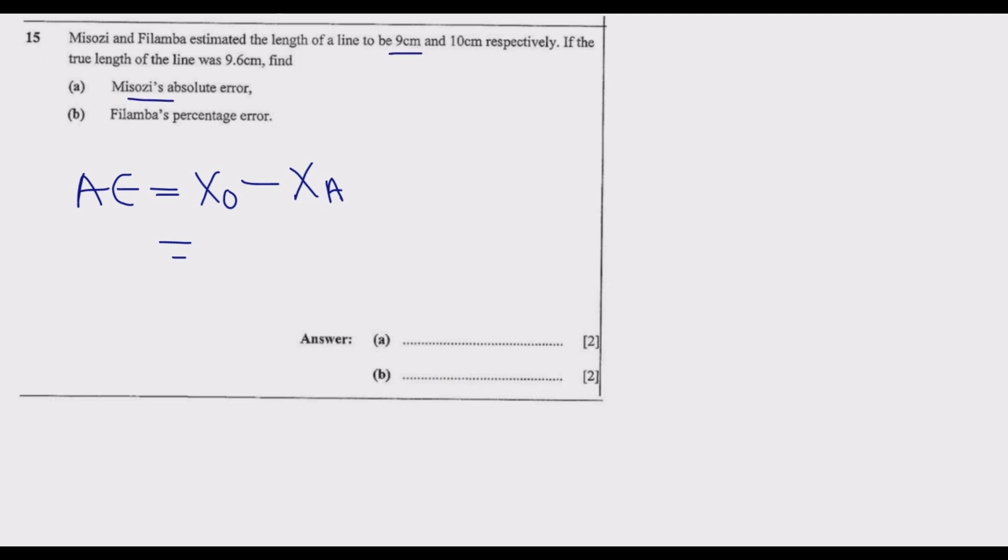So it's 9 centimeters minus the actual value which is 9.6. Nine minus 9.6, we get negative 0.6. But because it's an absolute error, we are saying how far is Misozi from the true value regardless of whether up or down.